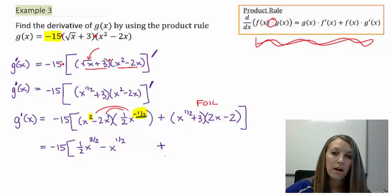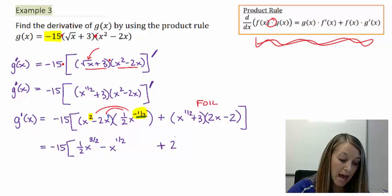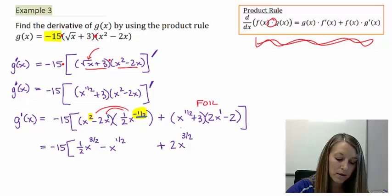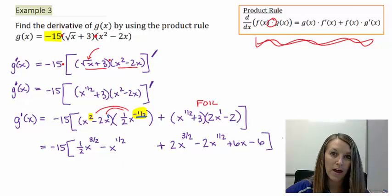Then plus, now I have to FOIL it. 2x times x to the one-half. I add my exponents. So I have a one exponent plus a one-half exponent. One and one-half, or three-halves. Outside is negative 2x to the one-half. Inside is positive 6x. And last is minus 6. And again, I have negative 15 times all of that.